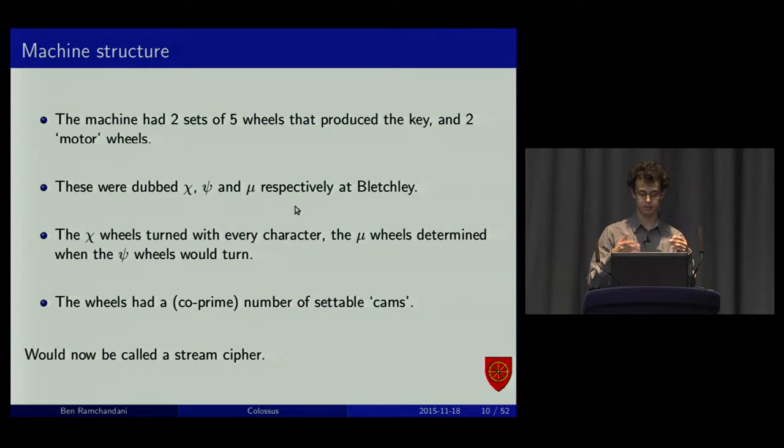They're dubbed chi, psi, and mu for the motor wheels at Bletchley because they'd never seen the machine before. So, just mathematical names. The number of cams was actually co-prime, which just means the length until the key repeats itself is as long as possible.